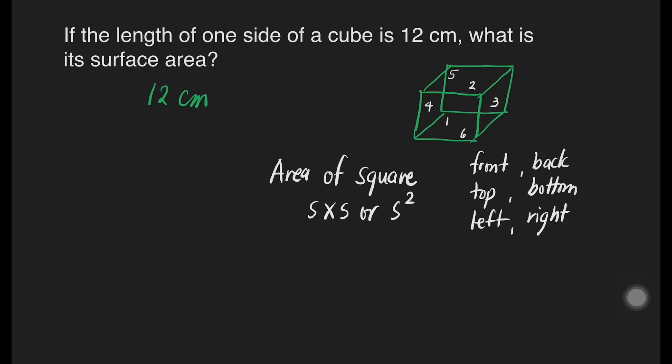So, we need to solve the area of the square first. Then, we will solve for the surface area. Let's get first the area. What is the length of one side of a cube here? That is 12 centimeters. So, let's write it. Let's have 12 centimeters.